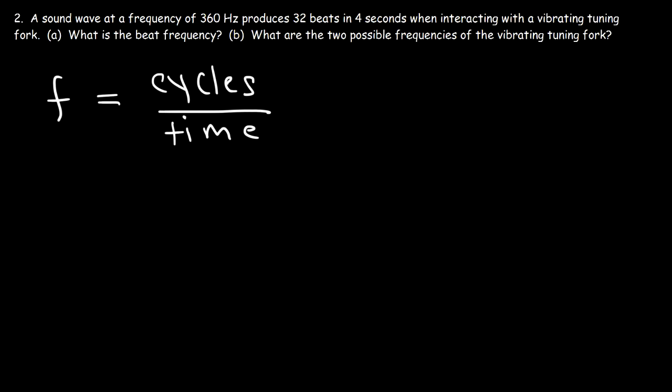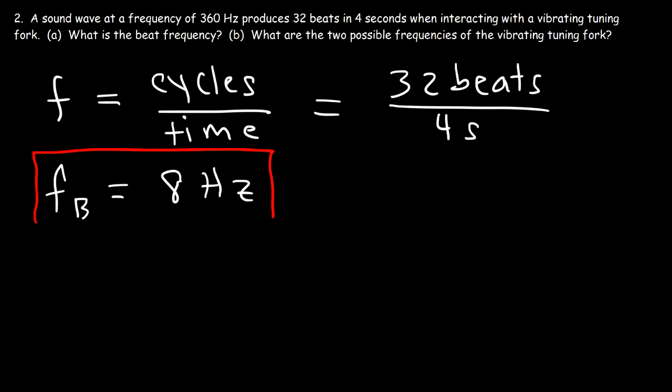In this example, the cycles are the number of beats, so there's 32 beats that occur in a time period of 4 seconds. The beat frequency is 32 divided by 4, which is 8 beats per second. So that's the beat frequency. What are the two possible frequencies of the vibrating tuning fork?